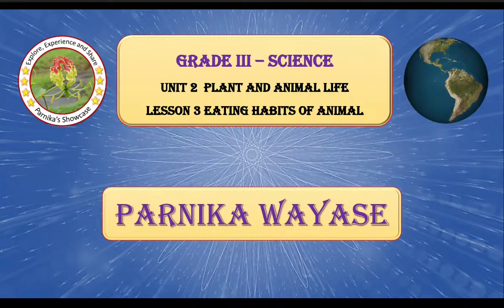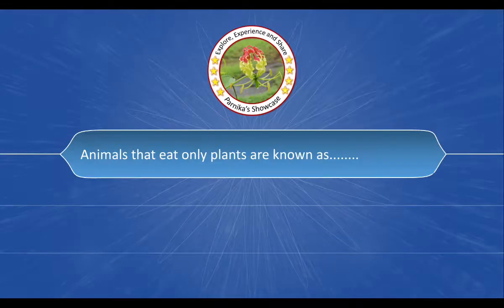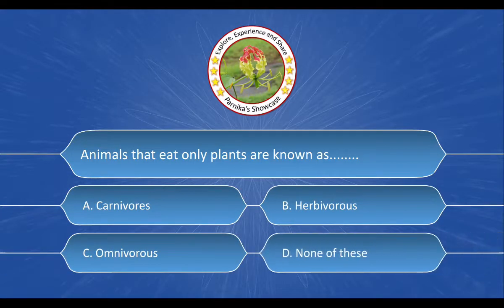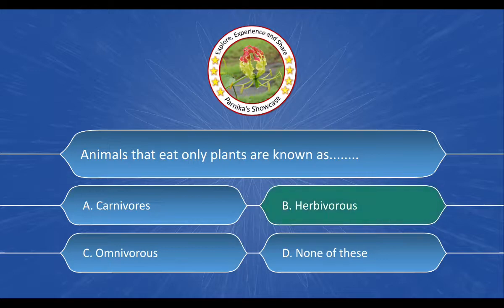Let us begin with the first question. Question 1: Animals that eat only plants are known as dash dash. The options are A. Carnivorous, B. Herbivorous, C. Omnivorous, D. None of these. And the correct answer is option B. Herbivorous.